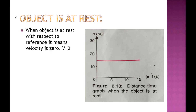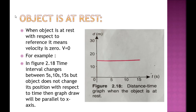When the object is at rest with respect to a reference point, it means its velocity is zero and its speed is zero, because it did not cover any distance. So v is equal to 0. In figure 2.18, the time interval changes between 5, 10, and 15 seconds, but the object does not change its position with respect to time — the graph drawn is parallel to the x-axis.